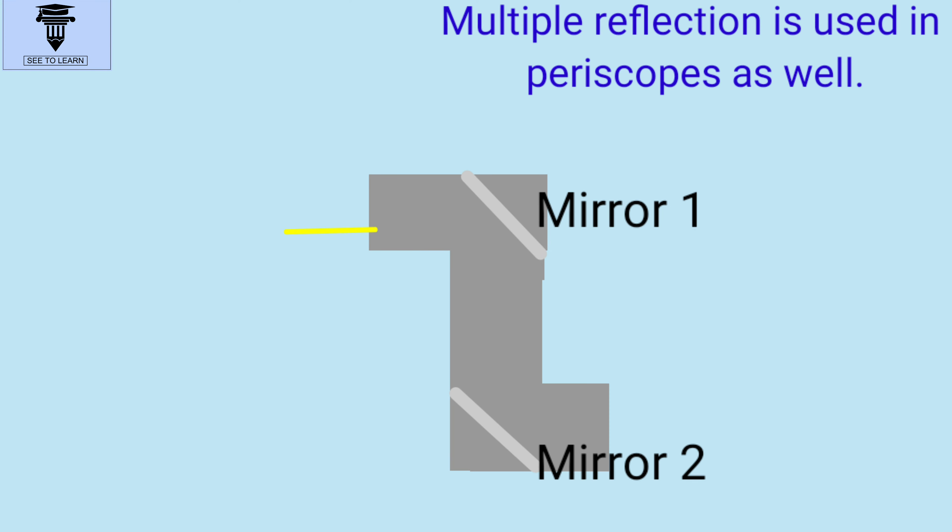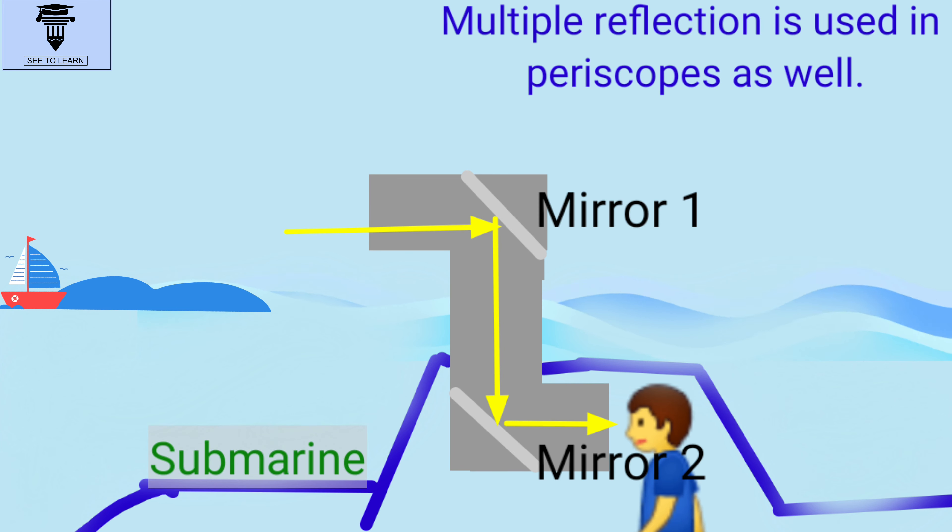Multiple reflection is used in periscopes as well. They are used in submarines to see objects on the surface of water.